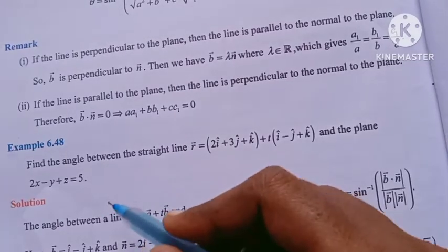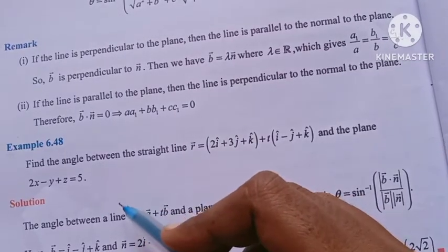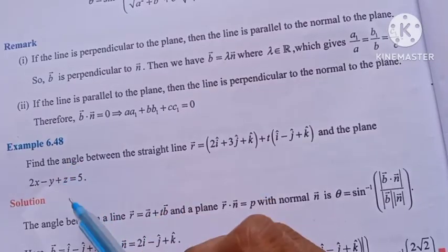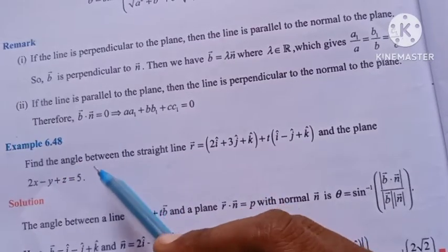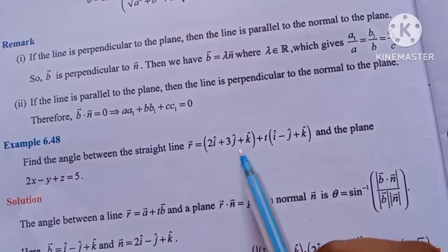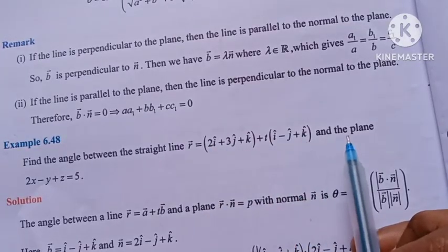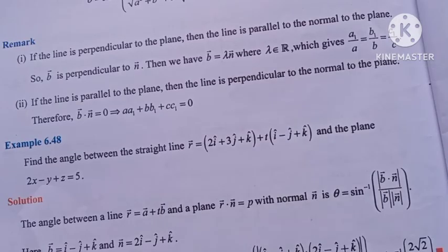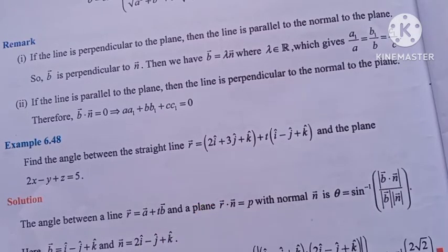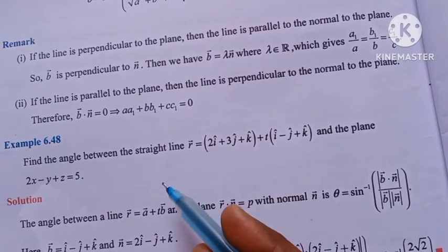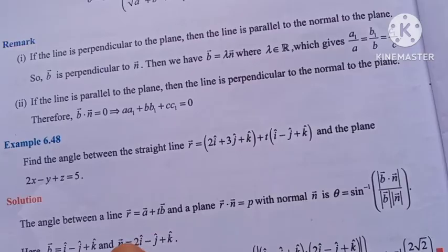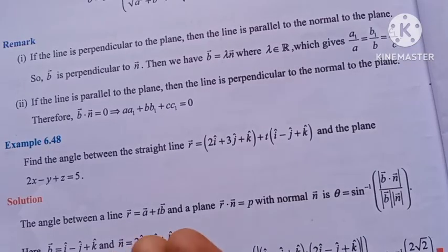Hi students, this is 12th grade Chapter 6, Example 6.48 — a long mark question. We need to find the angle between a straight line, where r vector equals a vector, and a plane. The next part asks for the acute angle between the two planes. To find the angle between a straight line and a plane, we need the angle between the direction vector b and the normal vector n.